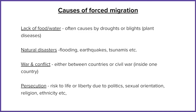And then persecution. Persecution is where there may be a risk of life or risk of imprisonment or lack of liberty due to their political beliefs, their sexual orientation, their religious beliefs or their ethnicity — innate qualities about a person that shouldn't be discriminated against, but in the place that they live may well be. So these are all reasons why people are forced to leave. They're not moving because they want to go somewhere in particular. They just need to leave their current home because if they don't, it risks their life or risks them being put in prison for something that they can't change about themselves.